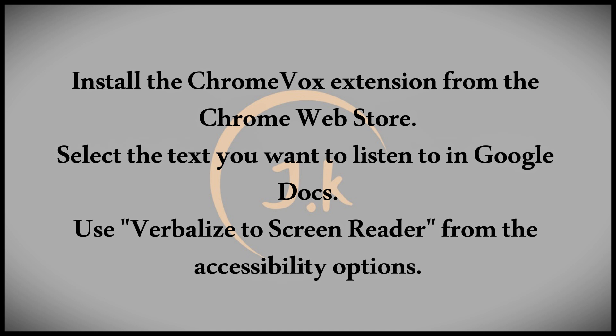Select the text you want to listen to, then go back to the Accessibility menu in Google Docs. Hover over Verbalize to Screen Reader and from the small menu that appears, click on Verbalize Selection.